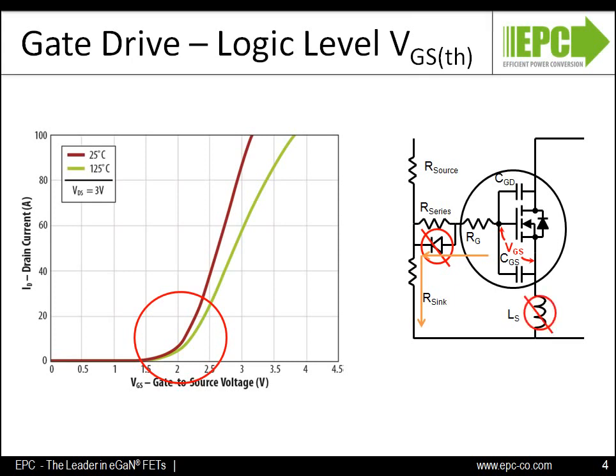Lastly, it is important to minimize the common source inductance by routing the gate return as close to the eGAN-FET as possible.